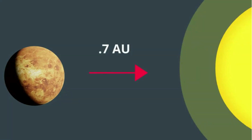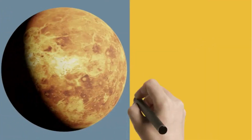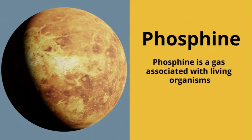This is interesting — the detection of phosphine recently in the atmosphere of Venus may indicate that there may be life in the atmosphere of Venus. For many years, life seemed improbable on this furnace of a planet, but this recent discovery of phosphine has caused scientists to rethink life on Venus.